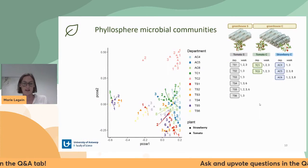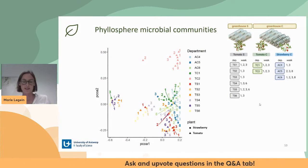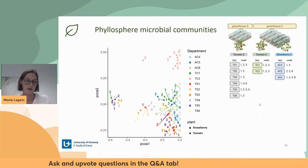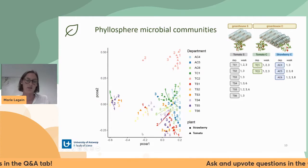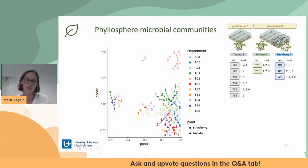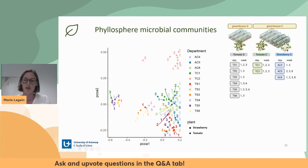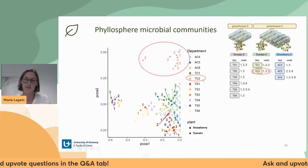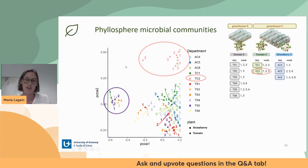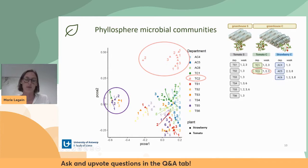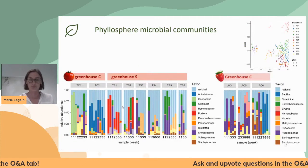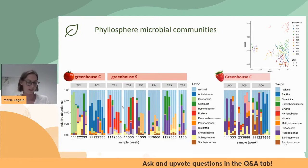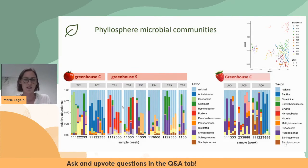Looking at the sequence results, this PCoA plot shows the beta diversity between samples. We see that all samples cluster into roughly three groups: one large group, a smaller cluster with samples all from the TC2 tomato department, and another cluster with samples from different departments and different time points.